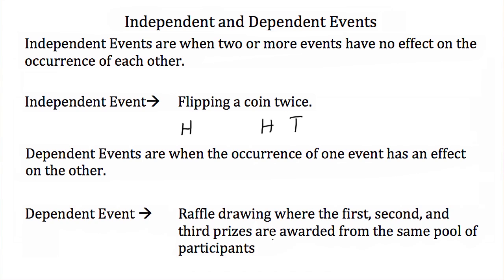So after the third prize is awarded, there is a 1 in 499 chance that you will win the second prize. Once the second prize is awarded, that person's ticket is removed.